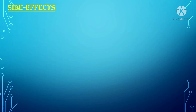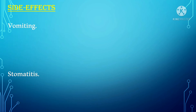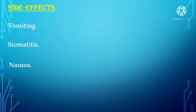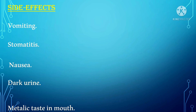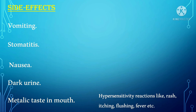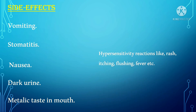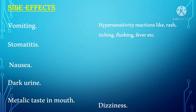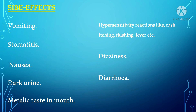The last part is side effects of metronidazole. Overdose of metronidazole causes different types of side effects like hypersensitivity reactions such as rash, itching, flushing, and fever, as well as dizziness, vomiting, dark urine, stomatitis, paresthesia, nausea, diarrhea, and metallic taste in the mouth. If these side effects occur after taking metronidazole, then consult your physician or doctor.